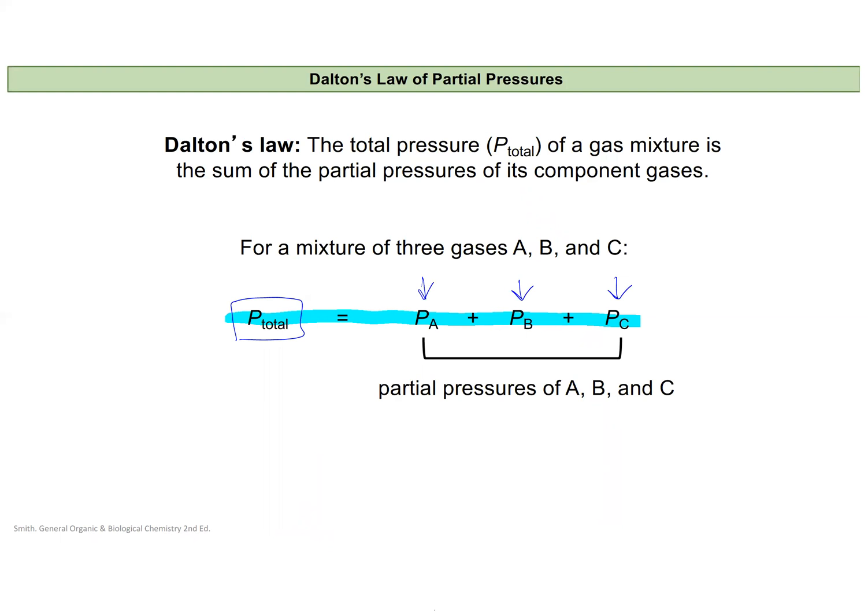Another way to think of this is our atmospheric pressure. Let's say we're at sea level and we have one atmosphere of atmospheric pressure. That is the pressure of all the gases in the atmosphere combined. So I can say that's really equal to the pressure of the oxygen in the air plus the pressure of the nitrogen plus the pressure of the carbon dioxide plus the pressure of the water vapor and anything else that happens to be in the air you're breathing.